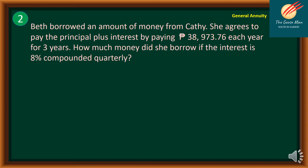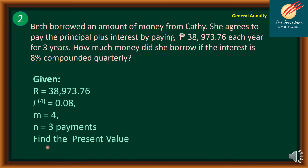Problem number two: Beth borrowed an amount of money from Kathy. She agrees to pay the principal plus interest by paying 38,973.76 pesos each year for three years. How much did she borrow if the interest is 8% compounded quarterly? The given values are: R equals 38,973.76; interest per year is 8%; number of conversions equals 4; total number of payments is 3. We want to find the present value.